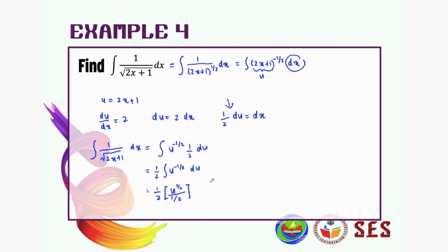We make it more simple: u to the 1/2. So 1 over 2 divided by 1/2 is 1, so what's left is u to the power of 1/2 plus c.